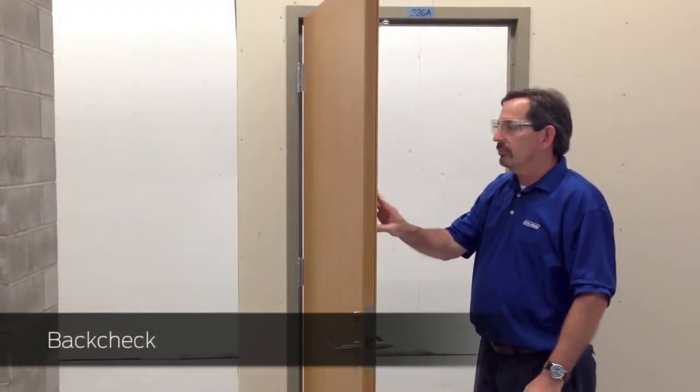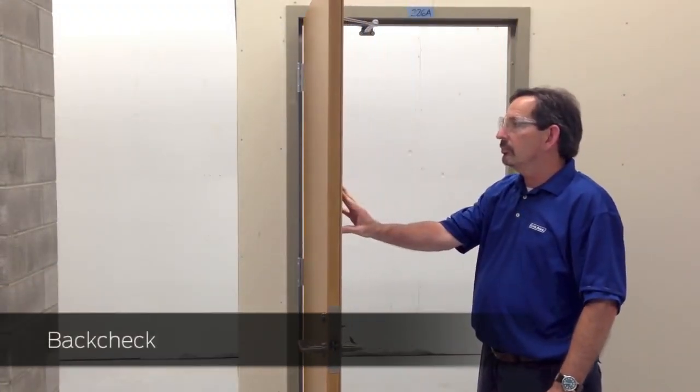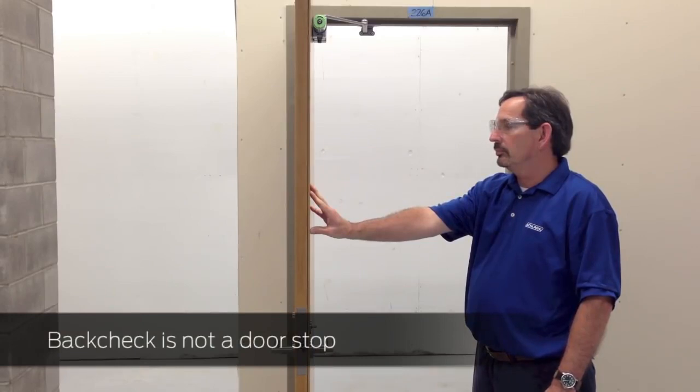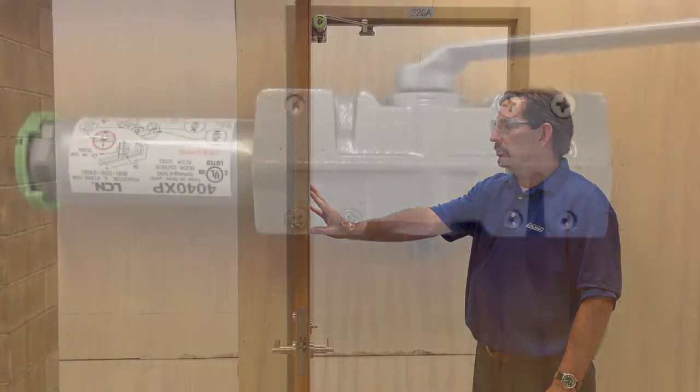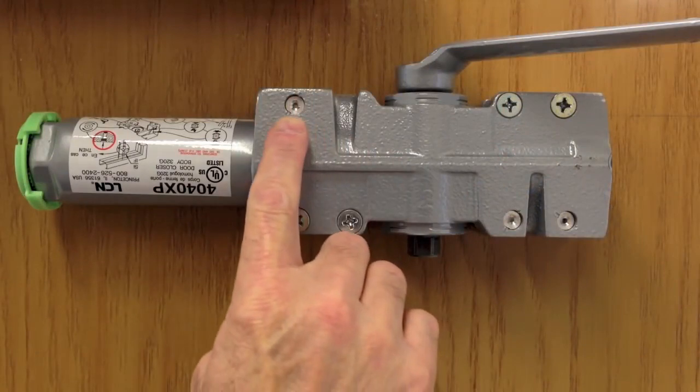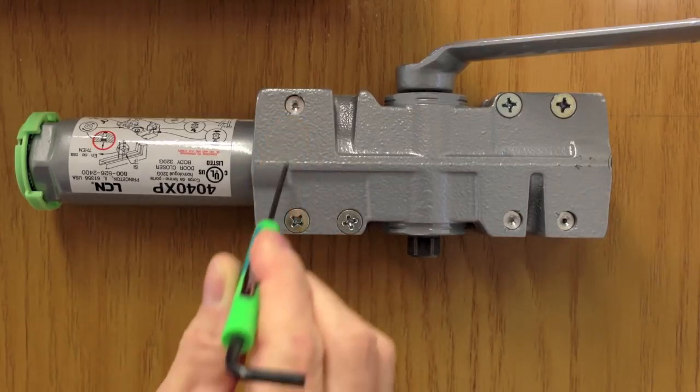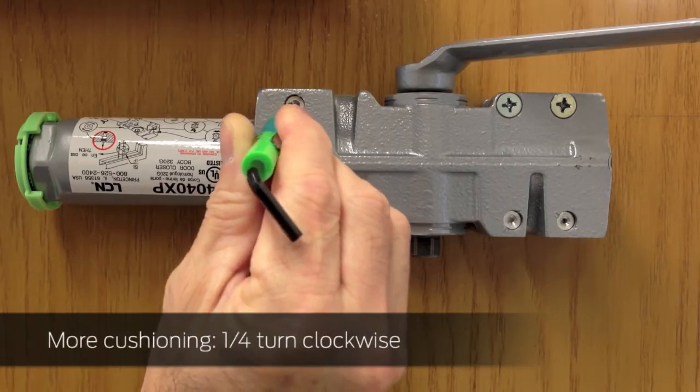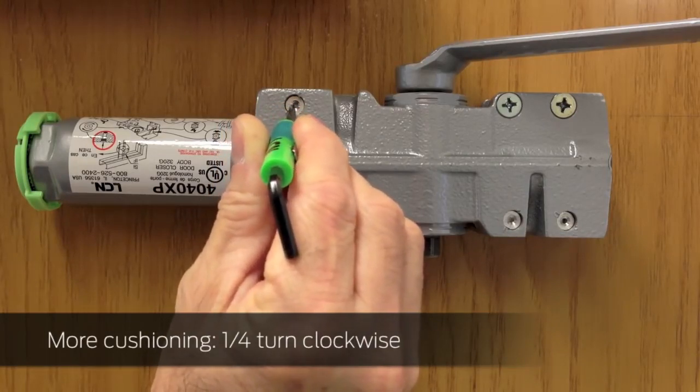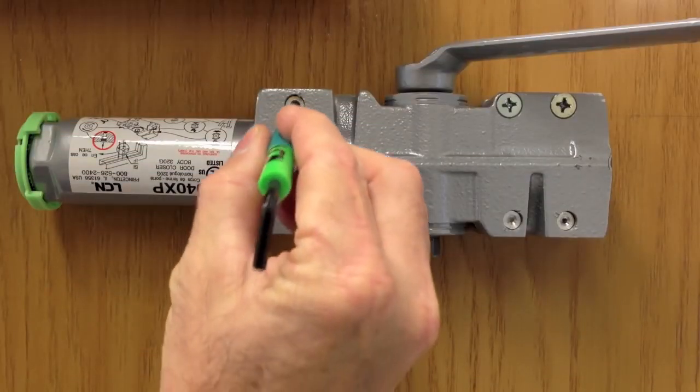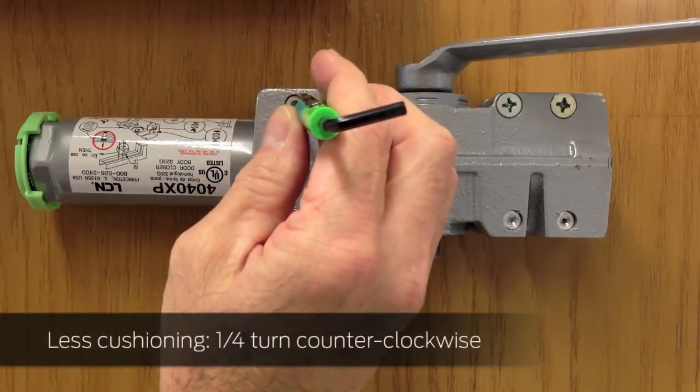Back check is the hydraulic cushioning to slow the door as it opens. This usually starts at 70 degrees. The door will slow down to reduce the wear on the door, wall, and hinges. Back check does not serve as a door stop. To adjust it, locate the back check screw, which is the screw on the face of the closer closest to the spring tube. If additional cushioning is needed, turn the screw one quarter turn clockwise and test. If less cushioning is needed, turn the screw one quarter turn counter clockwise and test.